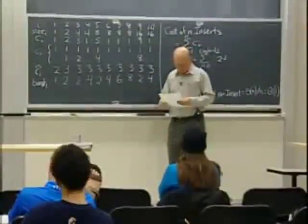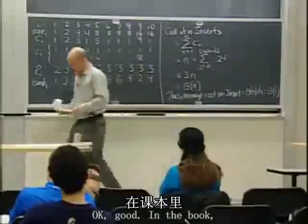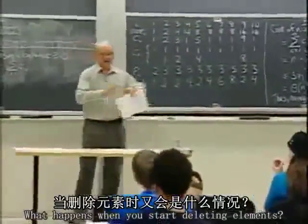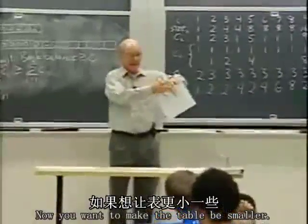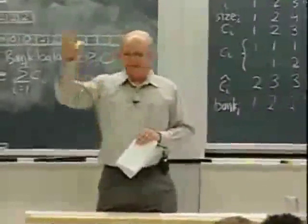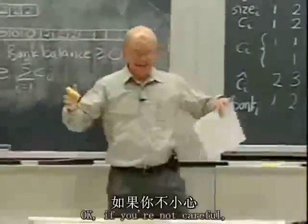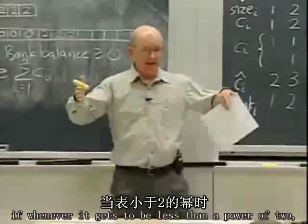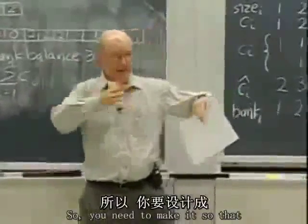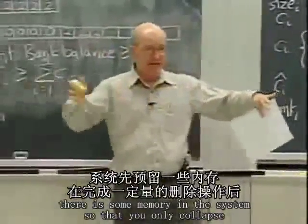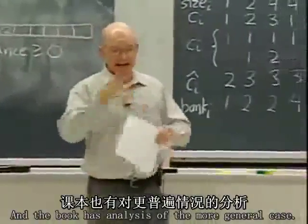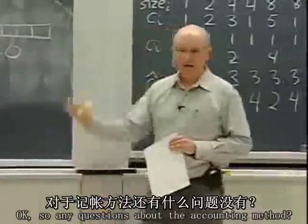In the book you can read about table contraction — what happens when you start deleting elements and want to make the table smaller. You have to be very careful about hysteresis: if whenever the table gets below a power of two you halve it, you can find yourself thrashing. You need to make it so there is some memory in the system and you only collapse after a sufficient number of deletions.